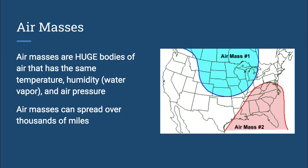And these air masses can spread over thousands of miles. You'll notice in the diagram on the right that there's two air masses. Those air masses, or bodies of air, can be the size of countries. And the air within that mass will have the same temperature, humidity, and air pressure.